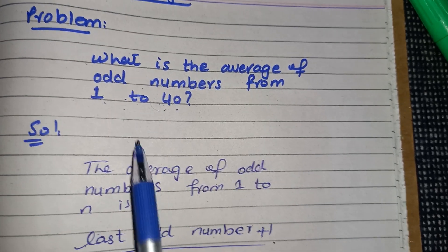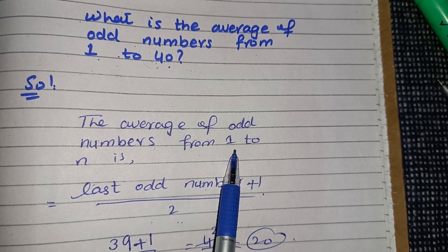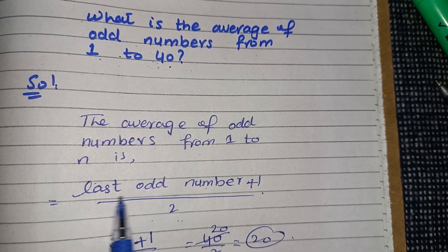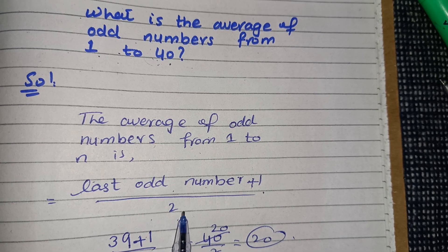The average of odd numbers from 1 to n is given by the last odd number plus 1, divided by 2.